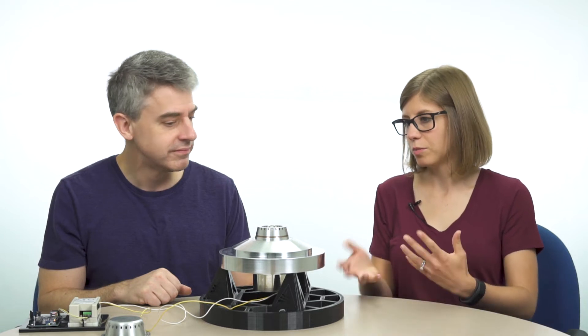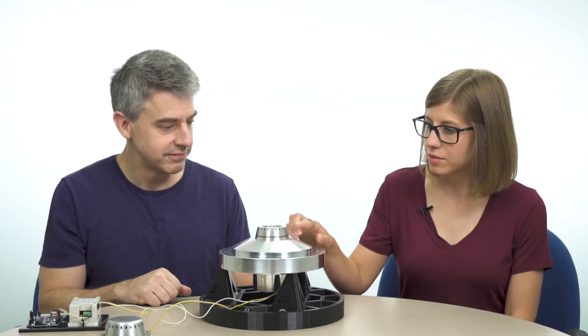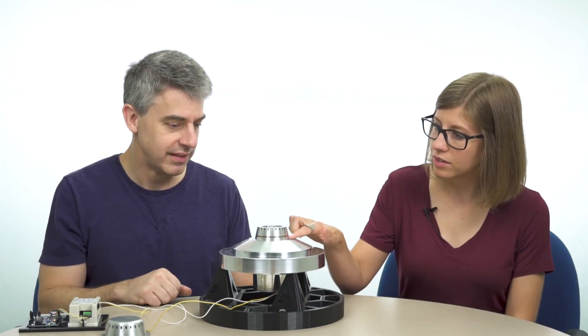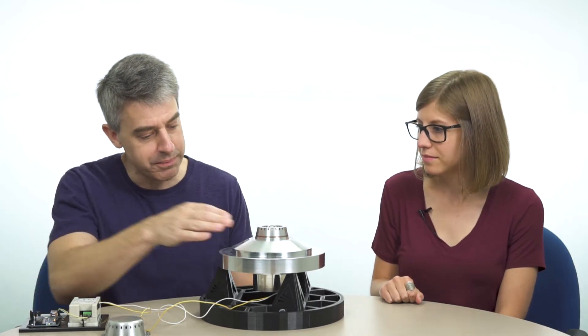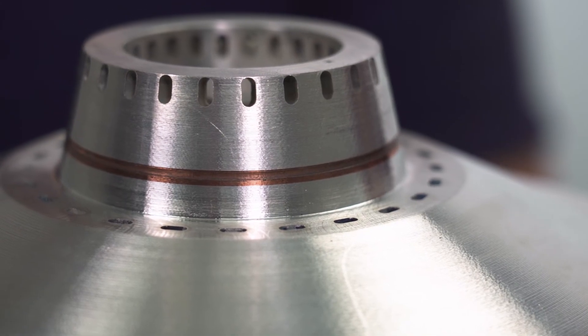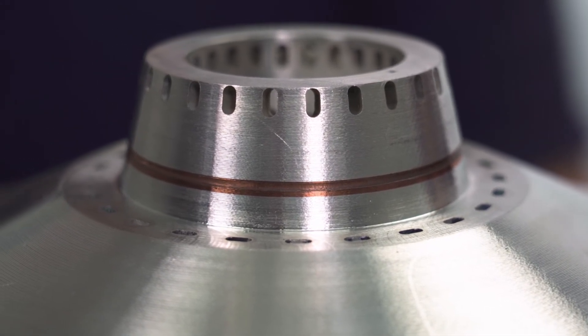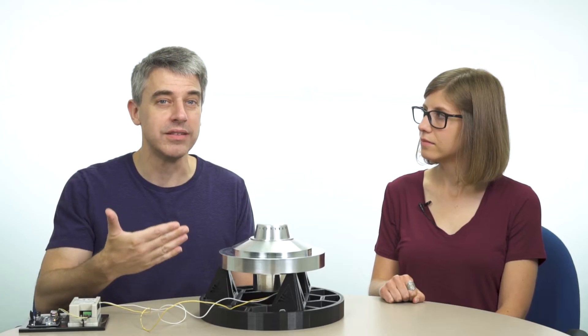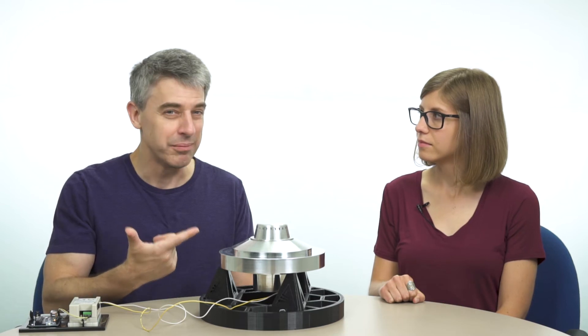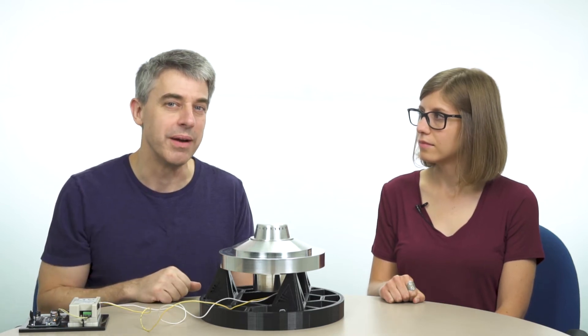All right. So one more question for you. All of this seems to be the same material except for this band right here. What is this? That's right. This is all aluminum except that band is copper. Another ability of this process, ultrasonic additive manufacturing, it makes building with dissimilar materials in the same part pretty easy.